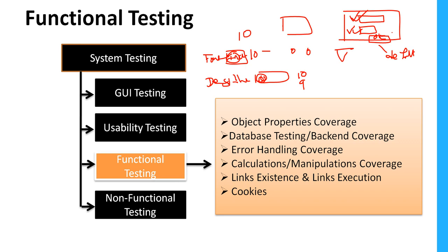Next is database and back-end testing, which is a huge kind of testing. We need to perform certain transactions on the front-end application and verify whether they are affecting the database. The user interacts with the UI — submitting, updating, deleting, or selecting data — and all this data comes from the database back-end. Within database testing there are two parts: database functional testing and database structural testing.